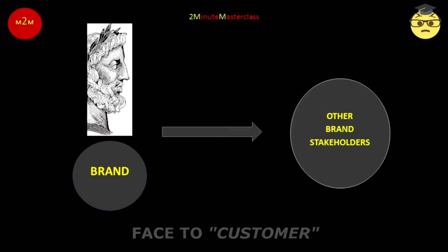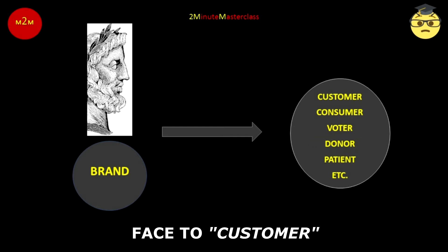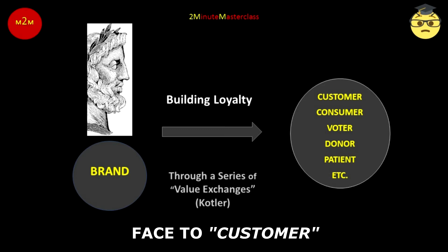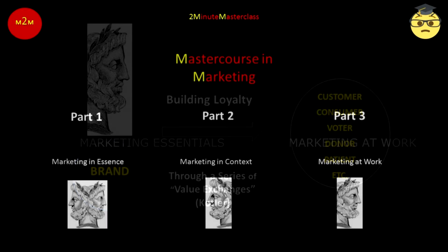But the owner will derive no benefit from the brand if the face towards other stakeholders does not smile, offering to them value as they choose the brand over others. This Janus face of the brand must persuade them to purchase, vote, donate, or give their goodwill — an accountant's term — building loyalty in a series of value exchanges which Phil Kotler identified as being at the heart of marketing.